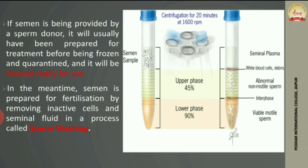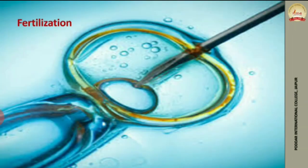The third step is sperm collection. If a donor sperm is used, it will have been previously frozen. The sperm sample undergoes sperm washing: the semen sample is mixed and centrifuged for 20 minutes at 1600 RPM. This produces three phases, with the last phase containing viable motile sperm — living sperm with the capacity to move — which are then collected for fertilization.